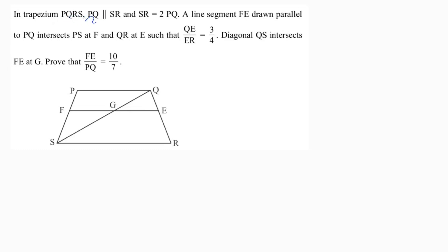In trapezium PQRS, PQ is parallel to SR and SR is twice PQ. A line segment FE is drawn parallel to PQ, so FE is parallel to PQ as well as SR, and intersects PS at F and QR at E such that QE by ER is 3 by 4. Diagonal QS intersects EF at G. We need to prove that FE by PQ is 10 by 7.